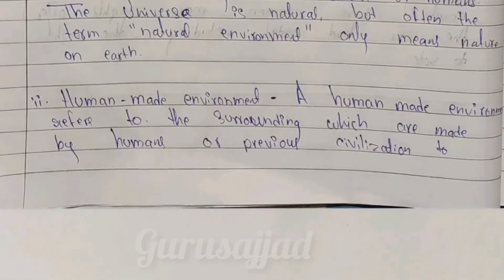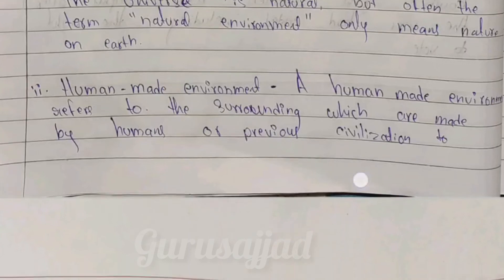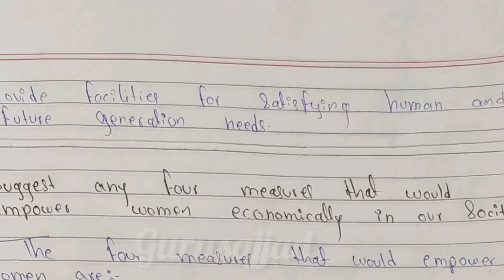Human-made environment refers to the surroundings which are made by humans and previous civilizations to provide facilities for satisfying human and future generation needs. For example, water coming from a tap cannot be called a natural environment — it is a man-made environment, because water is piped from outside to the house through artificial means.